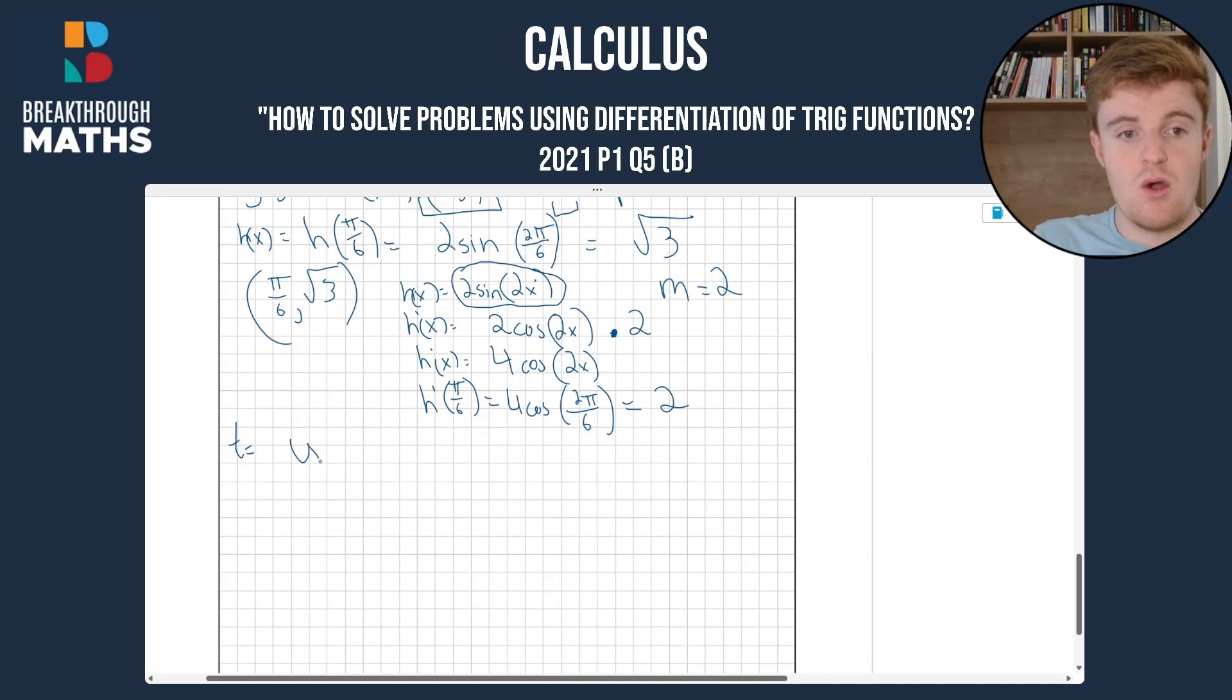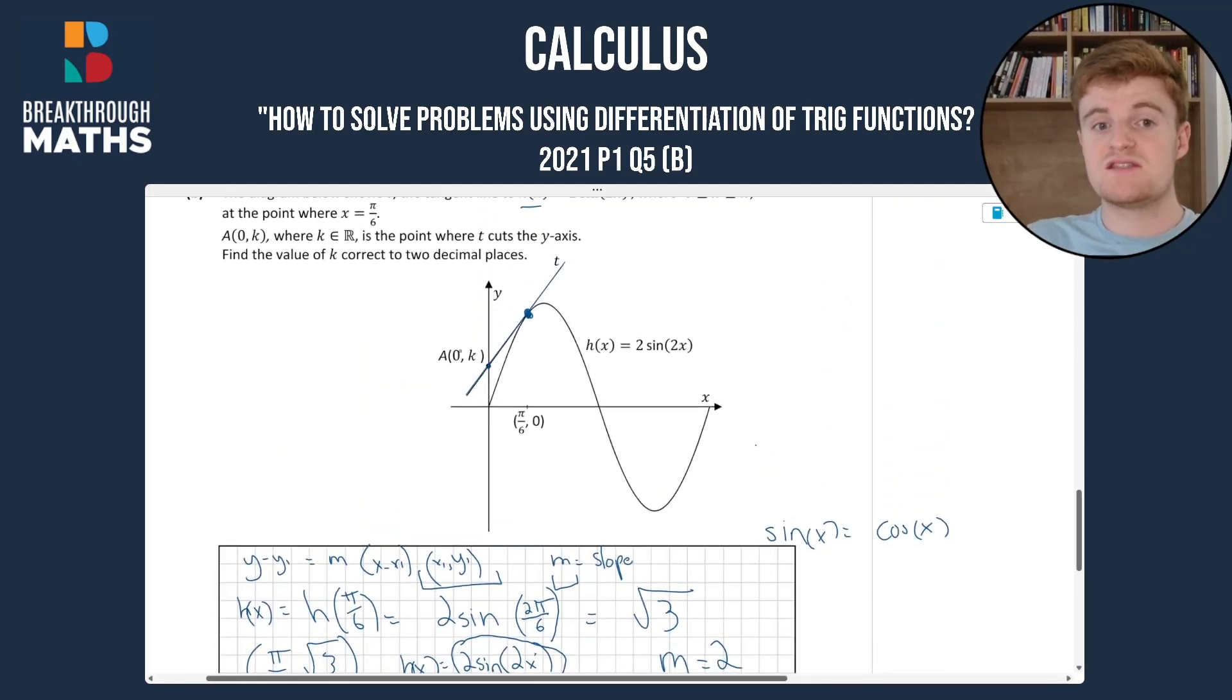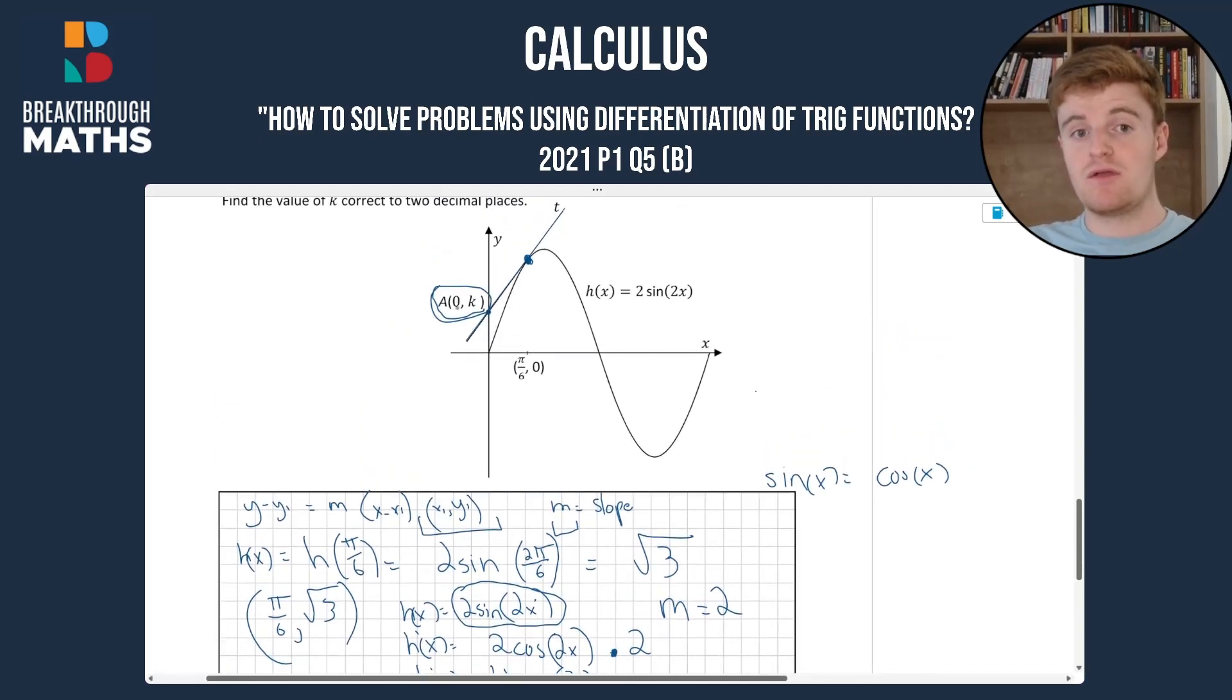So t equals y - y₁ = √3 equals m, which is 2 times (x - π/6). So now we have our equation, we can sub in for x₁ and y₁, or x and y, for the point (0, k). Because that's the point that we're looking for, we're looking for k.